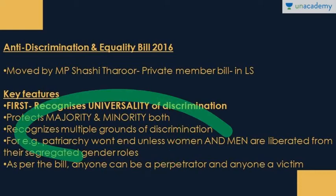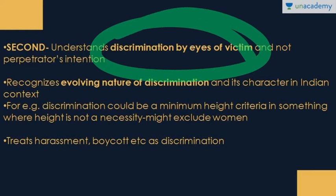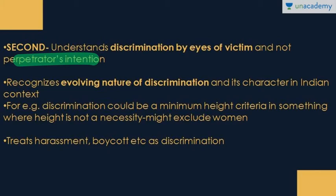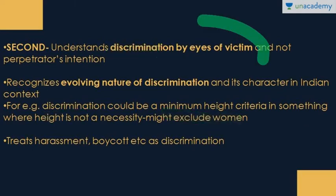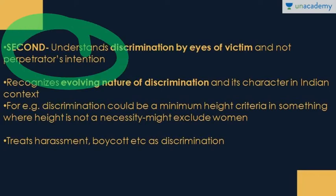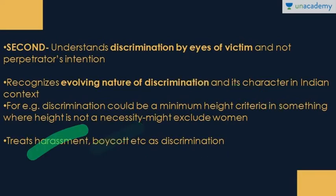The second feature of the bill is that it understands discrimination through the eyes of the victim, not merely the perpetrator's intention. For example, setting a minimum height criterion for a role where height is unnecessary may exclude women, who are generally shorter than men. It also takes care of the evolving nature of discrimination, such as boycott and harassment as forms of discrimination.